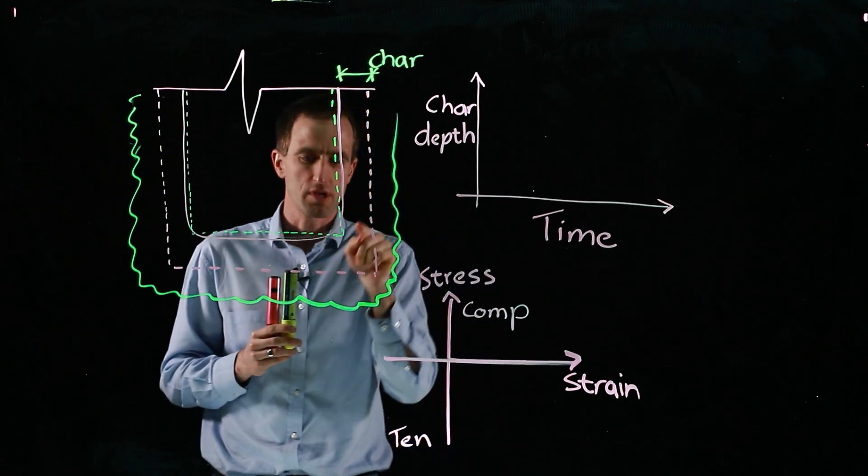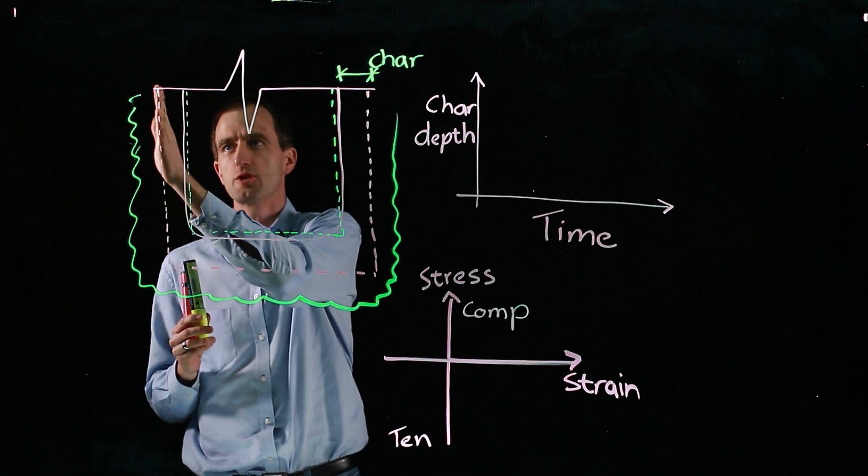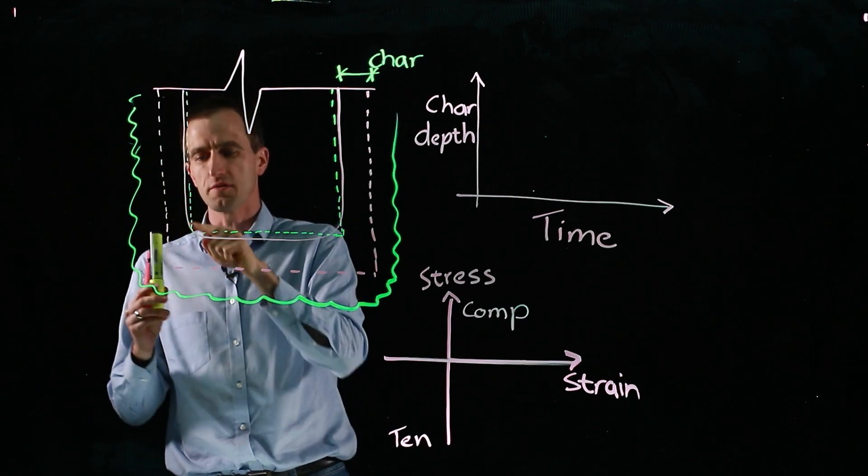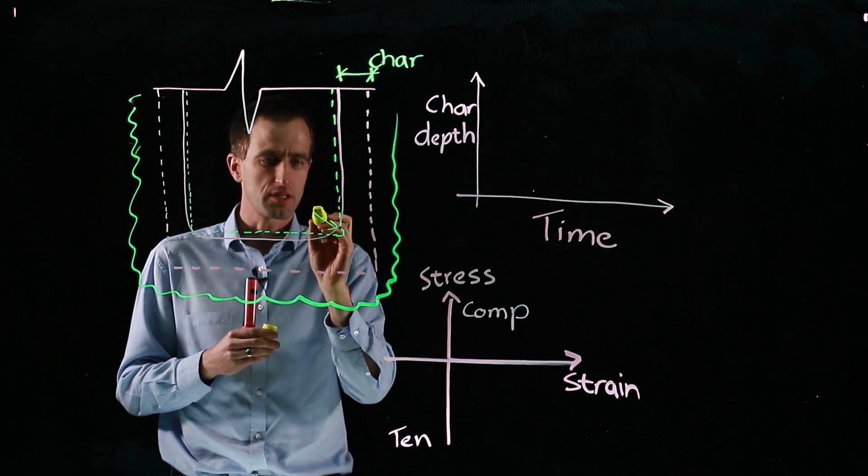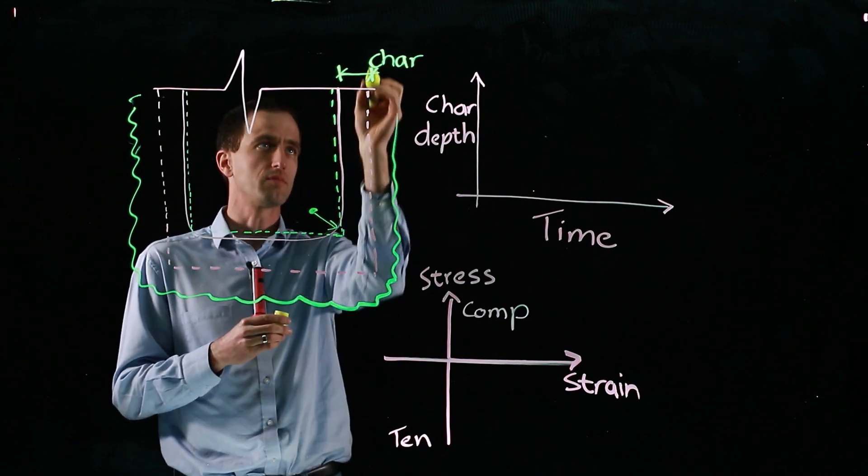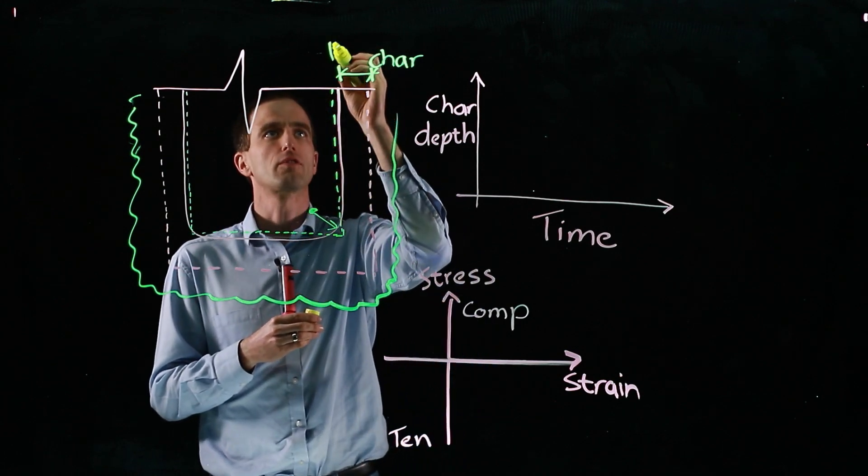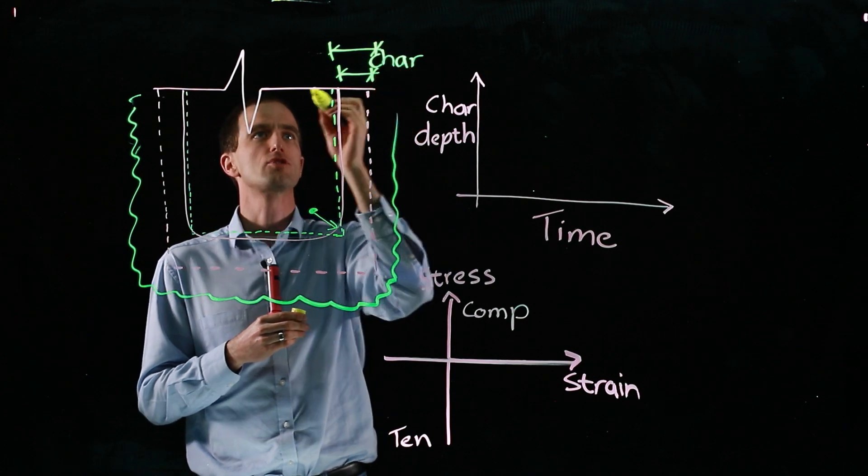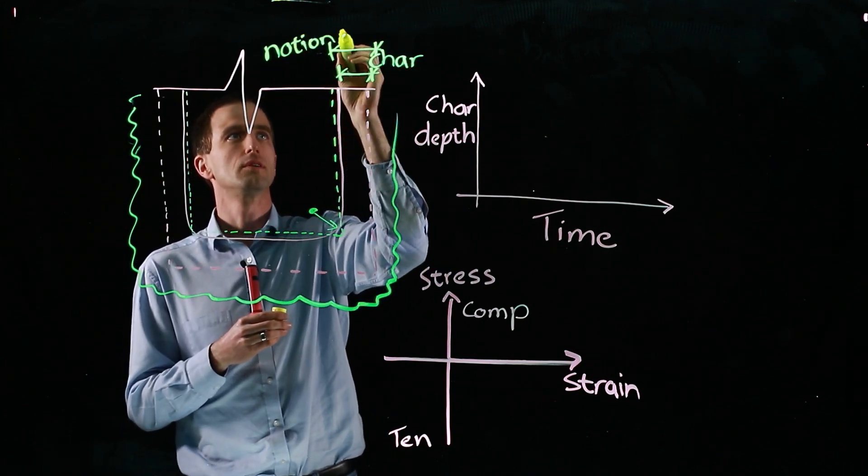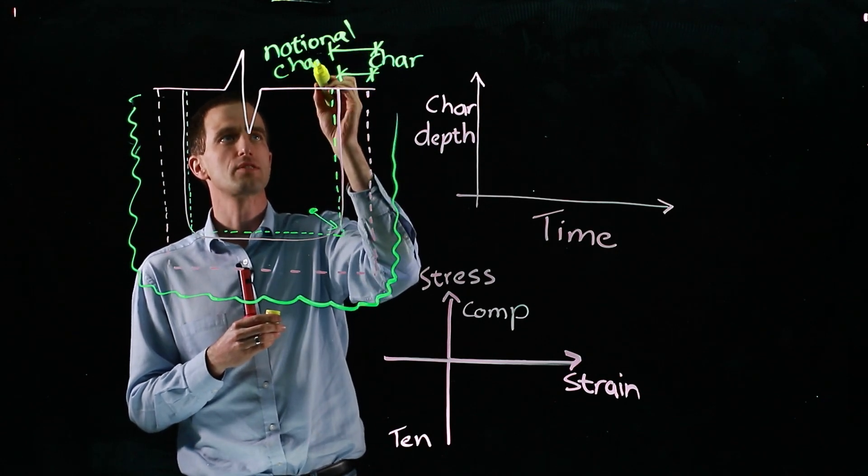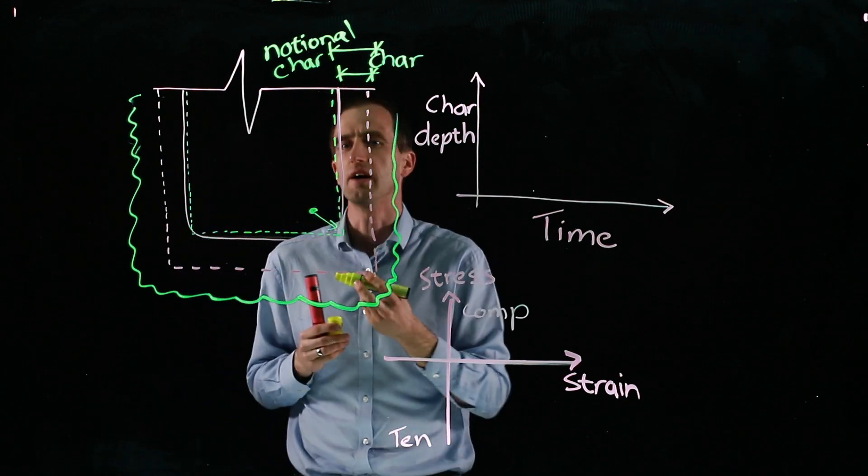But what happens at the corners, we also have a rounding effect as it penetrates. You've got one dimensional charring here, but at the corner you've got two dimensional charring. So we do have a radius that forms and we can take that radius as about the char depth that forms. But to account for the radius and other factors, we have what's a notional char depth there. So that's to include these other factors that proceeds as the fire continues.